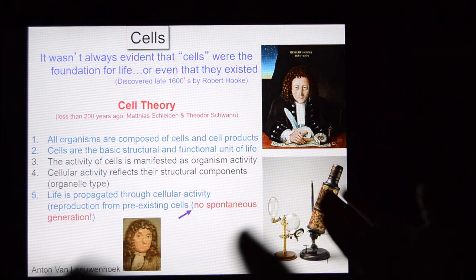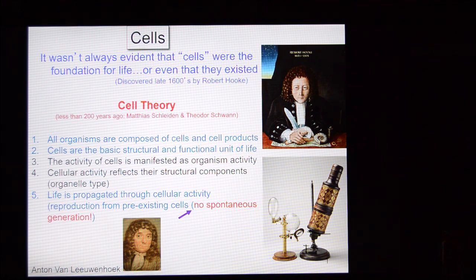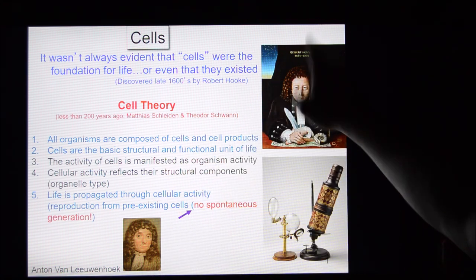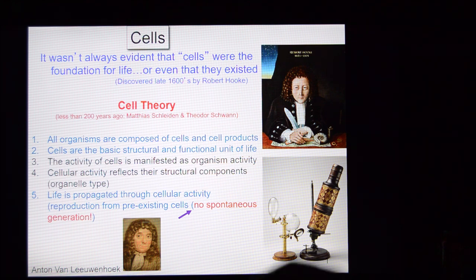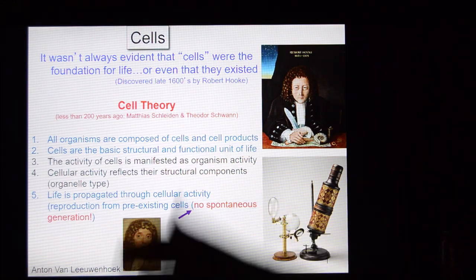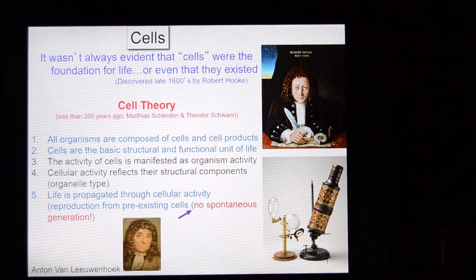Up until the 1600s, we weren't exactly sure how organisms were structured. It wasn't until this time that the term cell was coined by Robert Hooke. He and Anton van Leeuwenhoek were building microscopes that allowed them to see quite small things. Using this knowledge, they discerned that there were smaller units of life than that which is visible to the naked eye. It wasn't until just a couple hundred years ago with Matthias Schleiden and Theodore Schwann that unified cell theory came to pass, giving it five basic tenets.